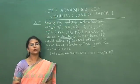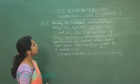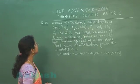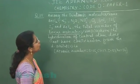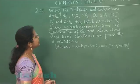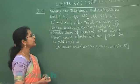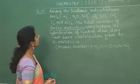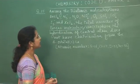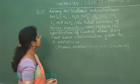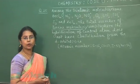Moving to question number 25: among the triatomic molecules and ions — beryllium chloride, N3 negative, N2O, NO2 positive, O3, SCl2, ICl2 negative, I3 negative, and xenon difluoride — find the total number of linear molecules where the hybridization of the central atom does not have contribution from the d orbital. Atomic numbers of few elements are given in the question.